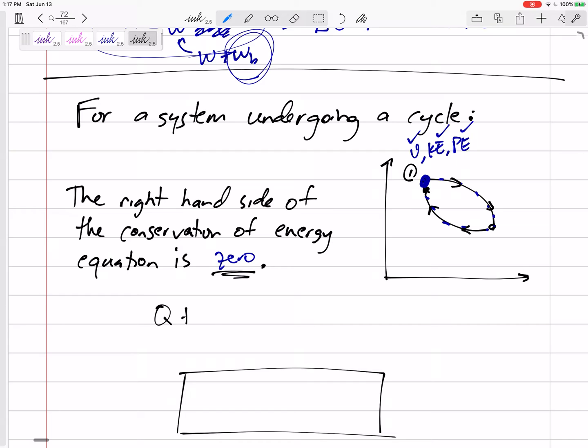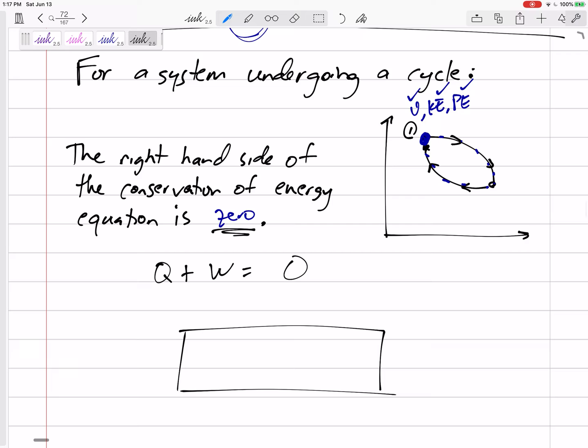So any Q plus W equals zero. Or the Q in, so let's kind of bring this W to the other side of our equation, like subtract it over here. The Q in, let's do this one, the sum of all Q in's and the minus of all Q out's equals the sum of all work out's and the minus of all work in's. Okay, so let's think about that.